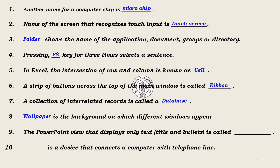9. The PowerPoint view that displays only text, that is title and bullets, is called outline view.